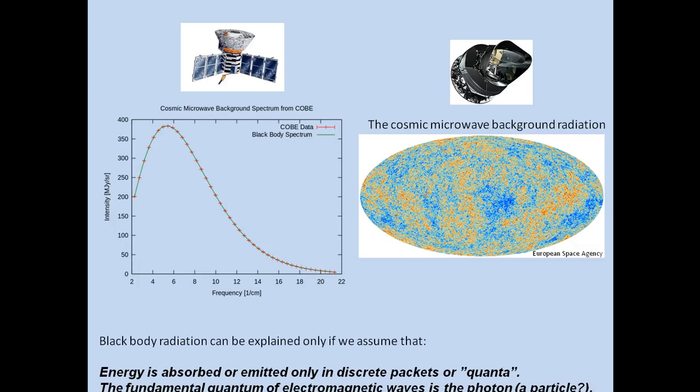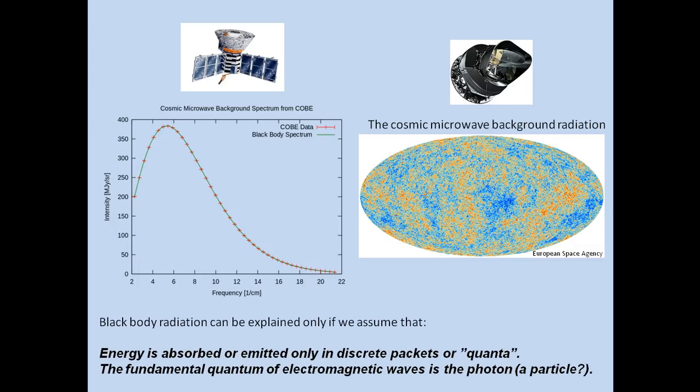And all this gives us a first message for this lecture. The message is that black body radiation can be explained only if we assume that energy is absorbed or emitted only in discrete packets or what is called quanta, plural of quantum. And the fundamental quantum of electromagnetic waves is the so-called photon.